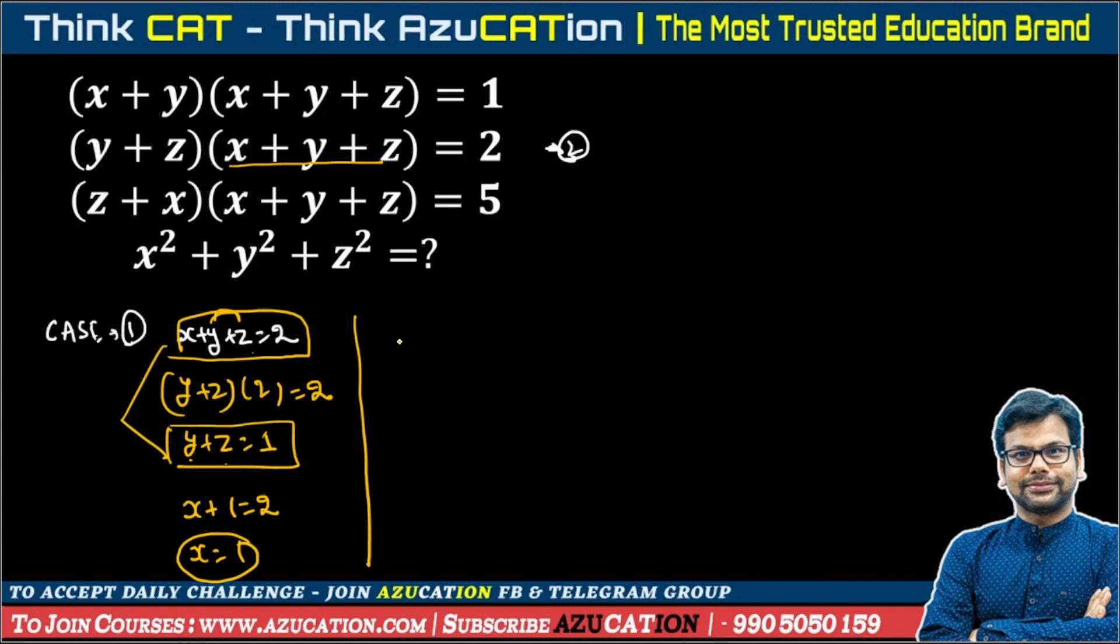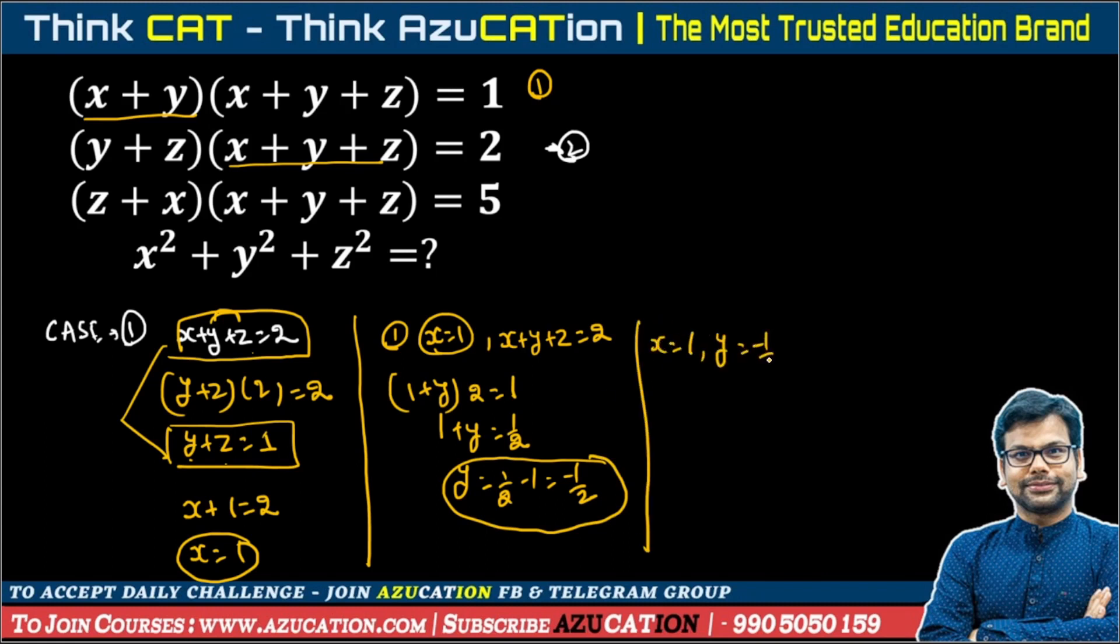Now I will use equation number 1. In equation number 1 we need to put x is equal to 1 and x plus y plus z is equal to 2. From this we get 1 plus y into 2 is equal to 1. So 1 plus y is equal to 1 by 2. Y is equal to 1 by 2 minus 1, that is minus 1 by 2. This is y we got. For z, we get 1 minus 1 by 2 plus z is equal to 2. So z is equal to 2 minus 1 plus 1 by 2 equal to 1 plus 1 by 2, which is equal to 3 by 2. This is my case 1.